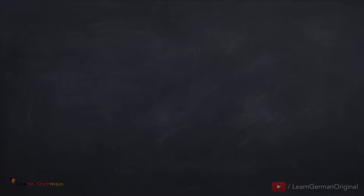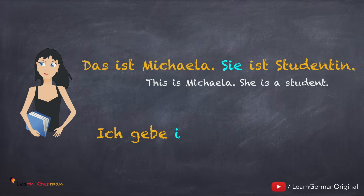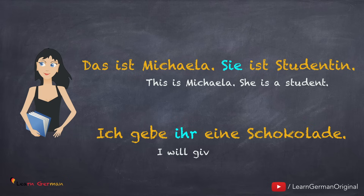Let's look at a sentence to understand them: 'Das ist Michaela. Sie ist Studentin. Ich gebe ihr eine Schokolade.' As you can see, ihr is the dative personal pronoun for sie.